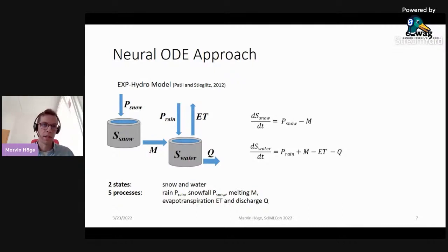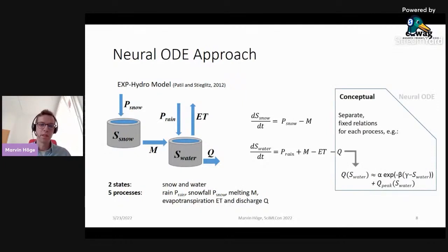In the plain conceptual model, each process is described by a fixed process equation, as shown here for discharge, for example. In the original XP-Hydro model, discharge depends solely on the water storage, some variables and some parameters, and some additional relation for peak flow. This holds similarly for all other processes, with ET or melting being also dependent on temperature, for example.